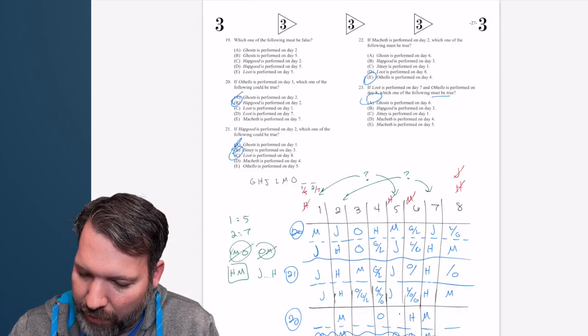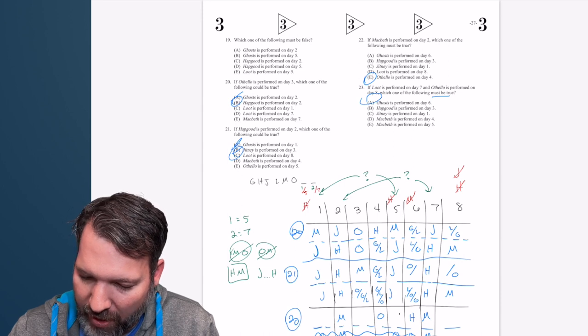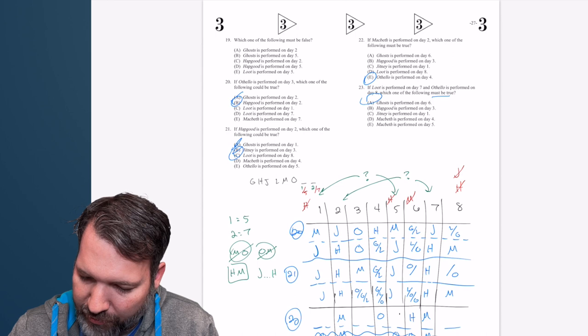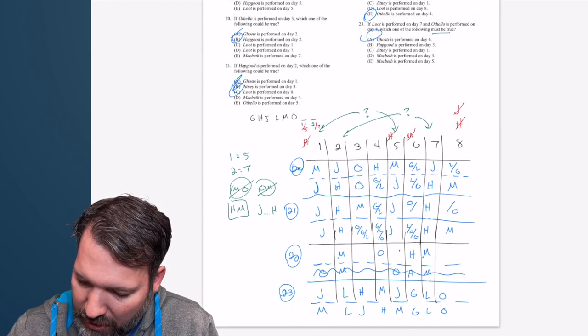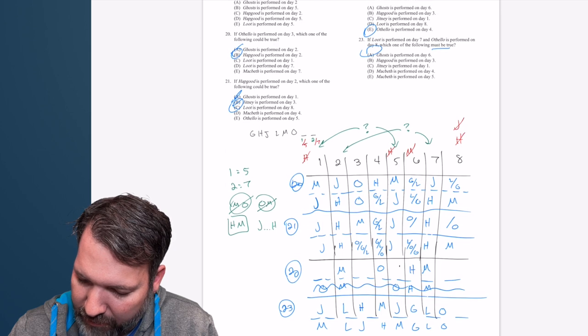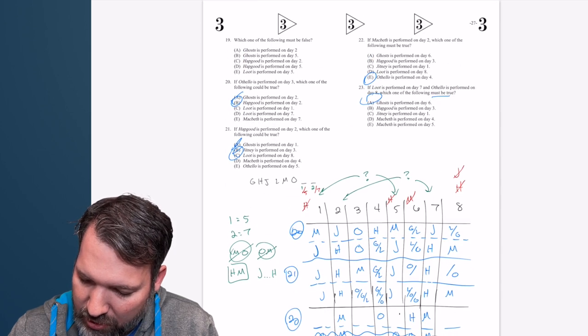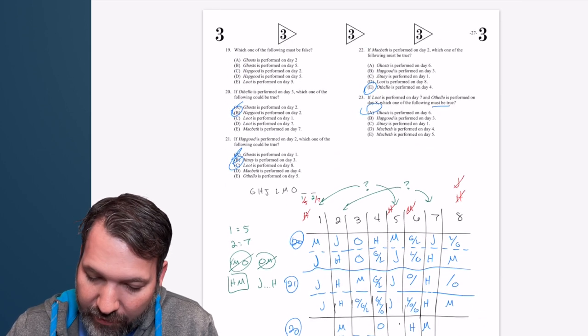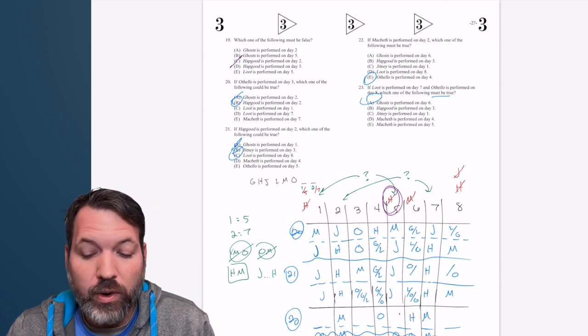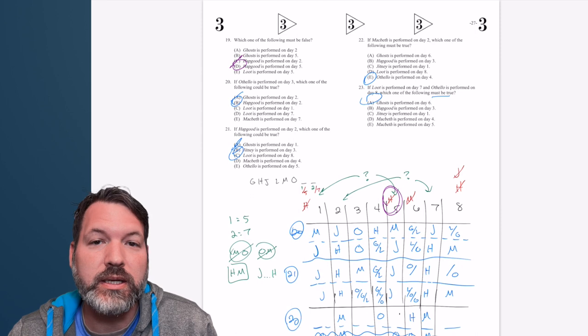Let's knock out number 19. Which of the following must be false? Hopefully we have a deduction that we know is false, but basically if we've seen it before, we can eliminate it. G is on day two. I've never seen that, so I can't eliminate it. G is on day five. I haven't specifically seen it. H is on day two. I've definitely seen that, so it's not C. H is on day five. There it is. That was one of our deductions. And so 19 is D.